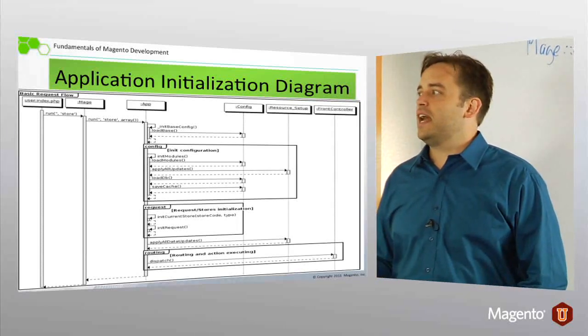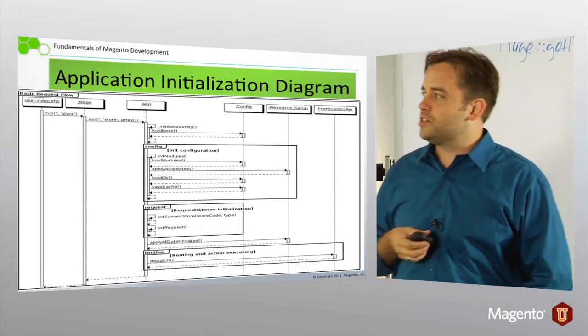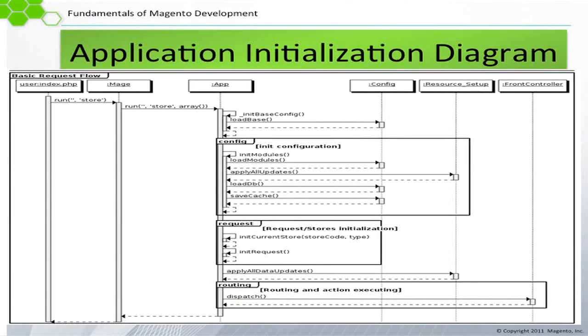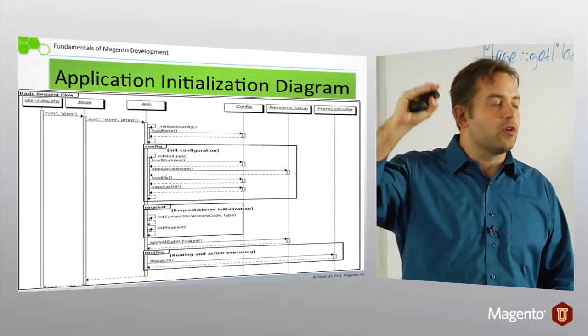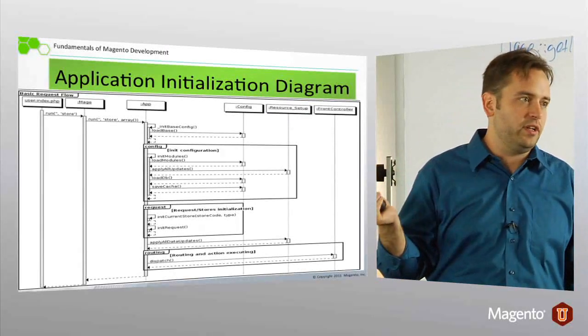Once we have this basic information, then we can really build out the config object and initialize our modules. And then we have a couple of interesting things that happen here. Apply all updates. That's a very cool one. That's actually those SQL migration files that you've seen in some modules. This is the first step where those files are evaluated. So, that's very early on in application initialization.